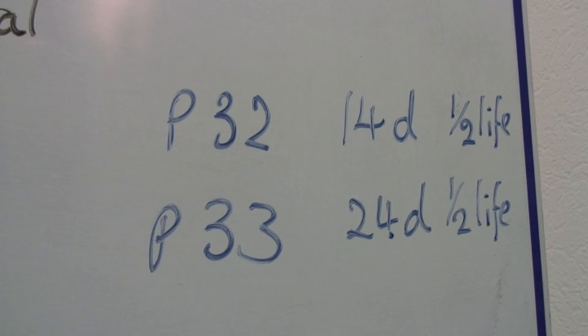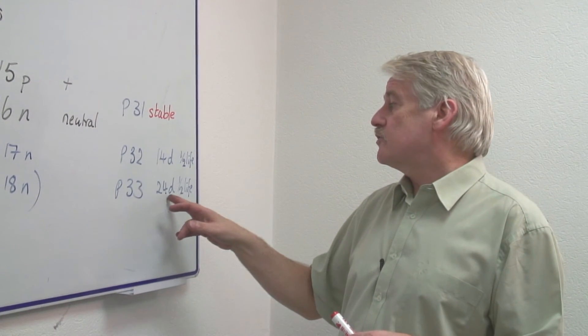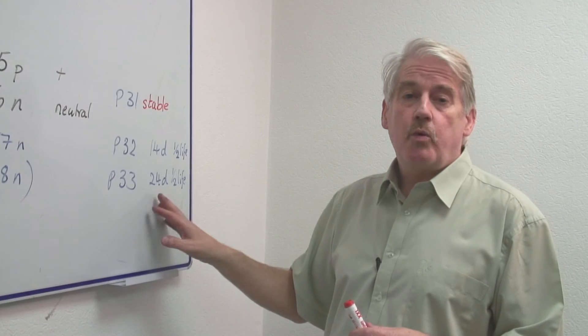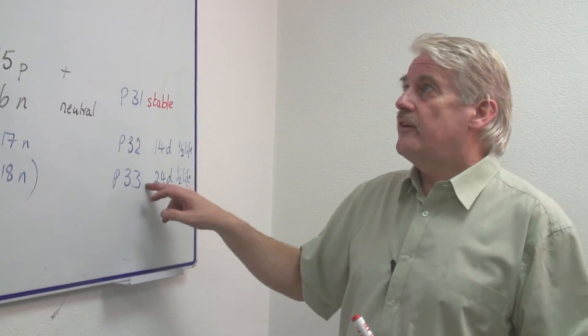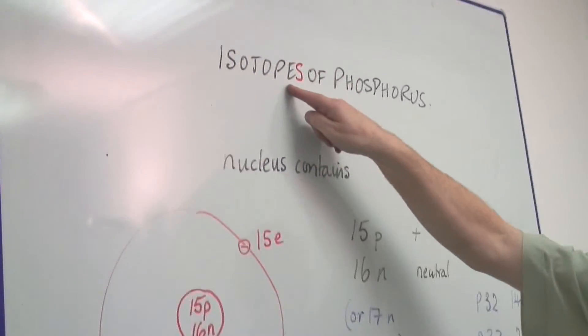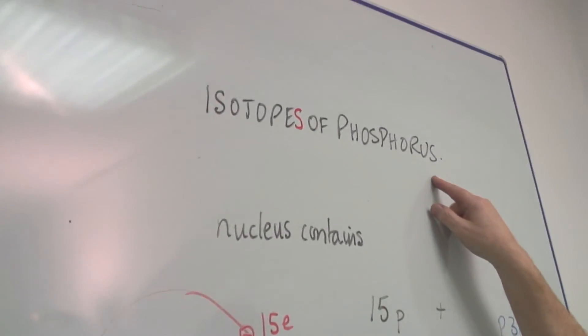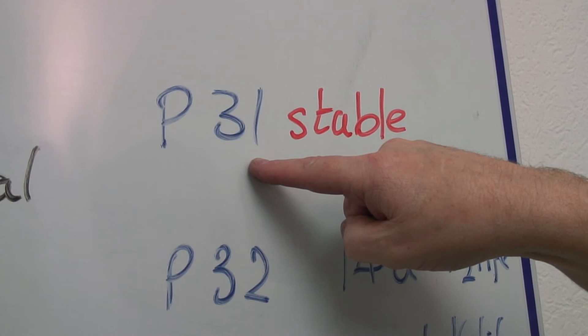Phosphorus-33 has a slightly longer half-life of twenty-four days, but still quite short. So these aren't stable. There is one stable isotope of phosphorus, and that is phosphorus-31.